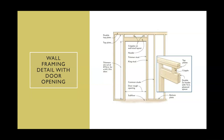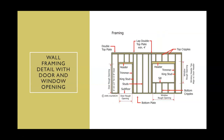This is a wall framing detail with a door opening, showing all the different parts. You need to study these parts, know what they're called, and be able to label them on a test. Study over them, understand where they're located, visualize it, and see what they actually do — what is their function? It's very easy to see the function just from looking at it. This is another wall framing detail with a door and window opening to give you a look at that. Of course, there are many different ways to frame a wall, and this is just one of them.